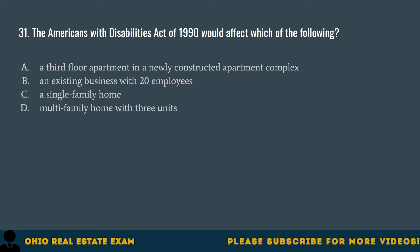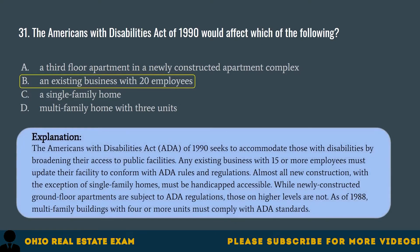Question 31. The Americans with Disabilities Act of 1990 would affect which of the following? A. A third floor apartment in a newly constructed apartment complex. B. An existing business with 20 employees. C. A single-family home. D. A multifamily home with three units. The correct answer is B. An existing business with 20 employees. The ADA of 1990 seeks to accommodate those with disabilities by broadening access to public facilities. Any existing business with 15 or more employees must update their facility to conform with ADA rules. Almost all new construction, except single-family homes, must be handicapped accessible. Newly constructed ground-floor apartments are subject to ADA regulations, but those on higher levels are not. As of 1988, multifamily buildings with four or more units must comply with ADA standards.